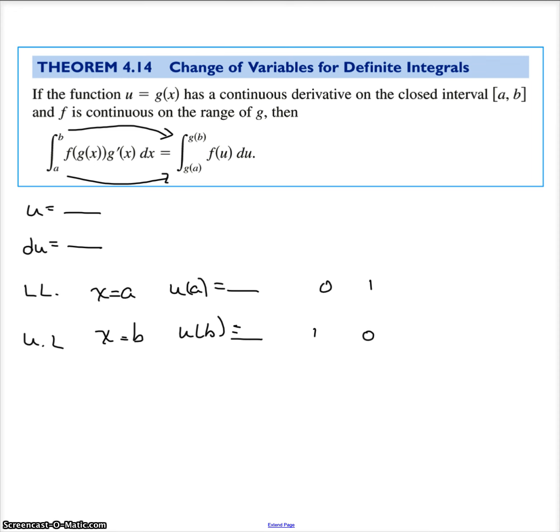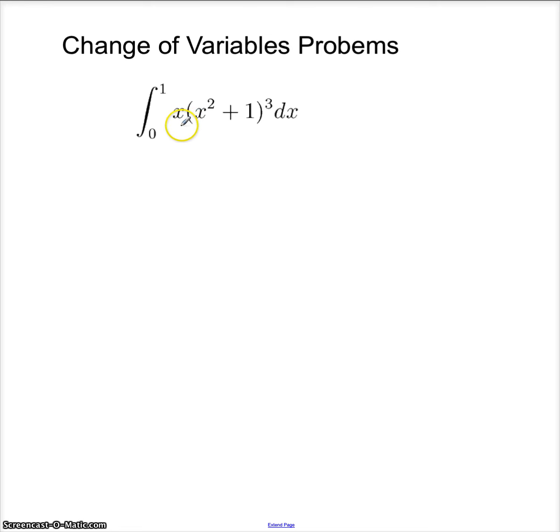Now, let's look at this problem right here. x squared plus 1 cubed times x dx. Let's let u equal the inside here. That's usually a good place to start. So du is 2x dx. Now, I have this. This is going to be u cubed, but you can see I need a 2 here, so I need 1 half out here.